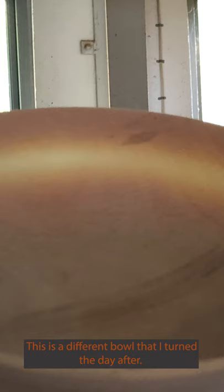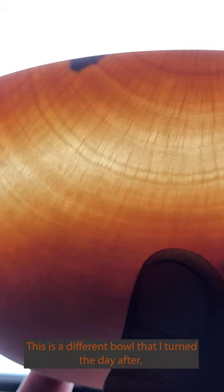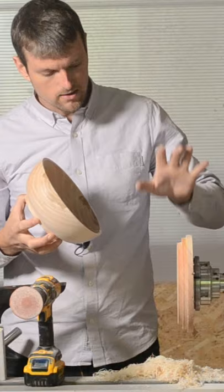If it's a really thin bowl, you can shine the light through to see if you have any weak spots or any hot spots. And then put it back on and it's going to run absolutely true because the jam chuck is a dry piece of wood.